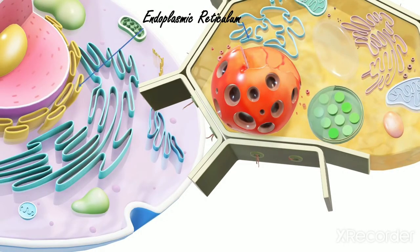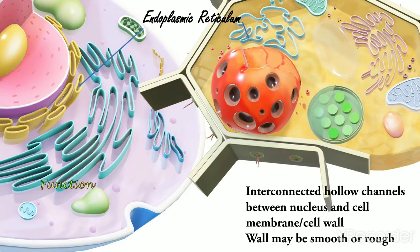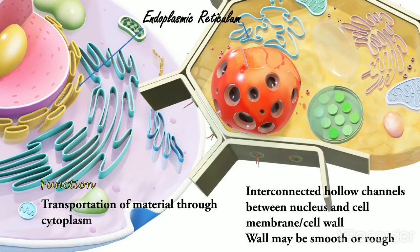Four, Endoplasmic reticulum. These are interconnected hollow channels found between nucleus and cell wall. The wall of endoplasmic reticulum may be smooth or rough. Function: They help in transporting the materials through cytoplasm. Rough surface endoplasmic reticulum is involved in protein synthesis.